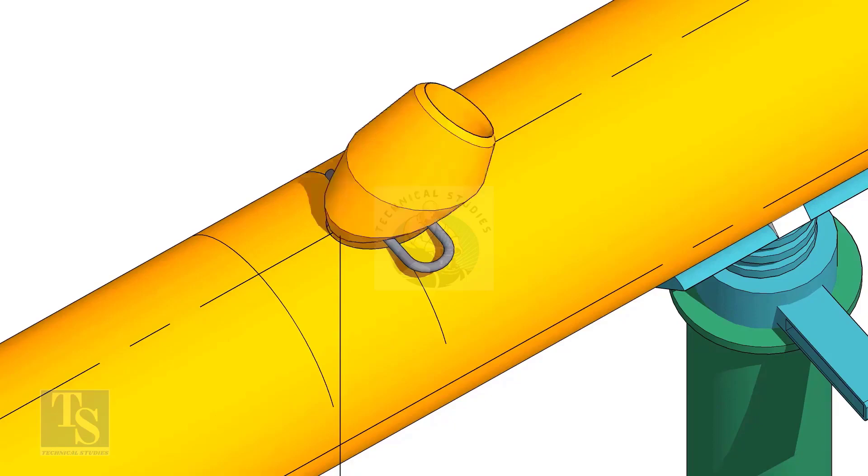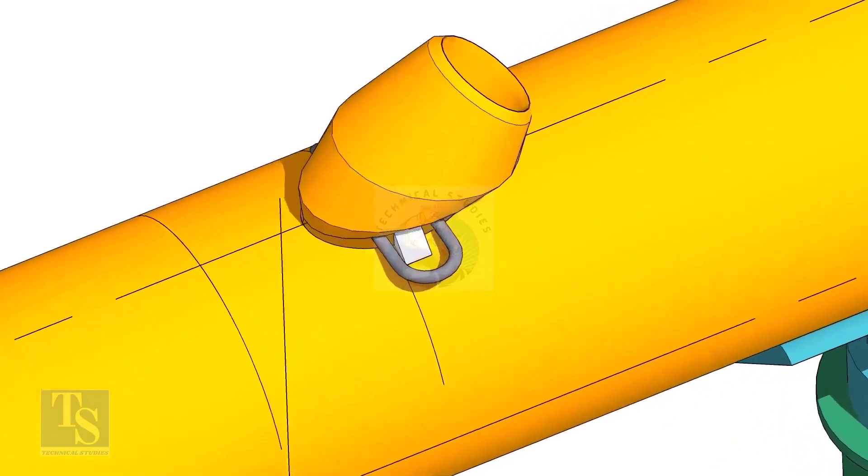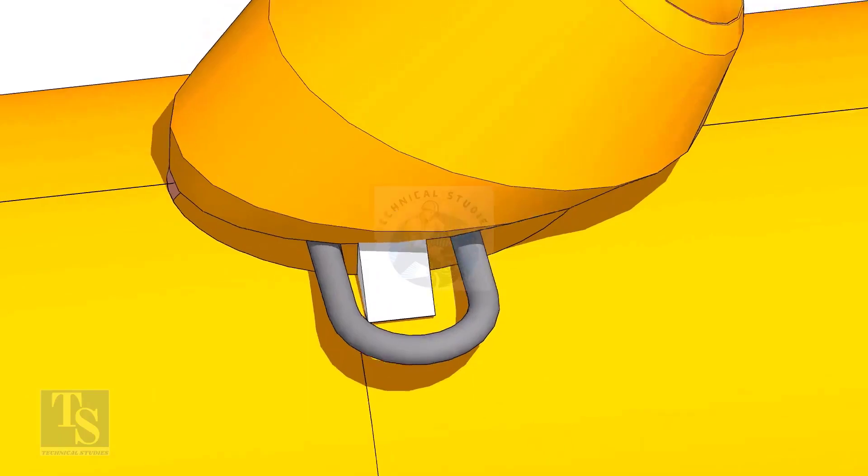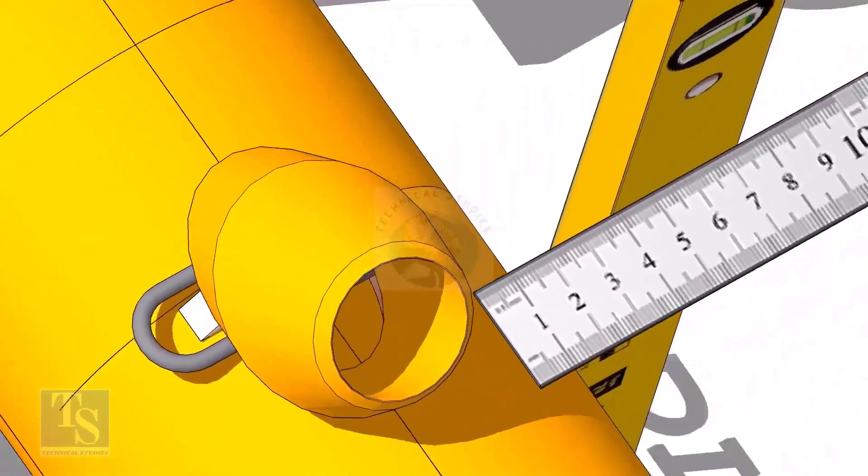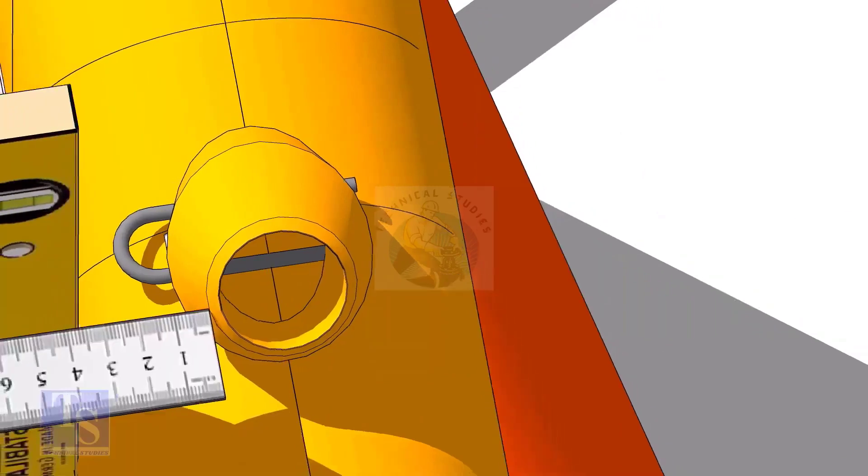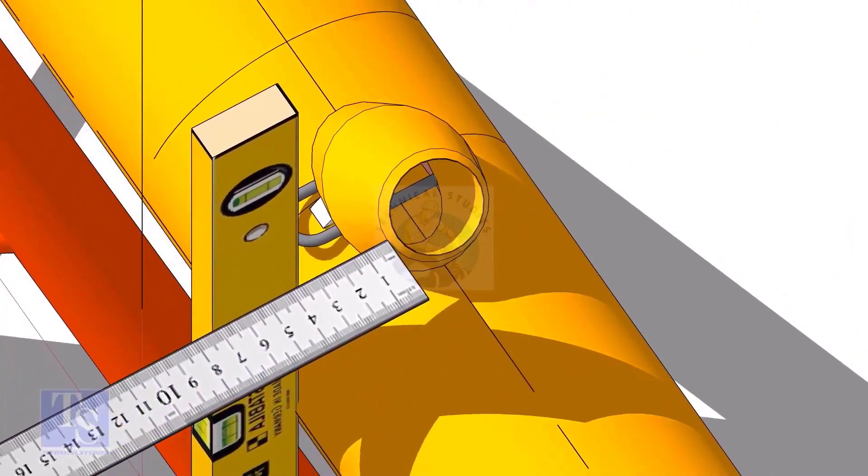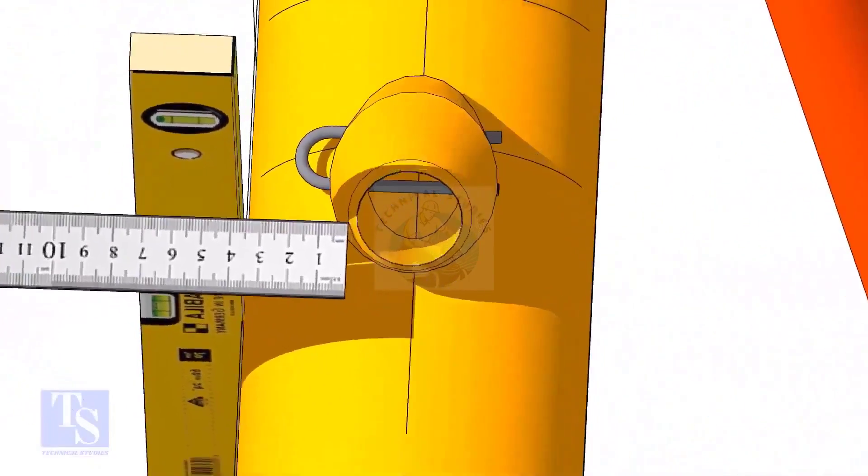Put the laterolette on the center of the hole. Tack weld on one side. Equal the distance from both sides of the laterolette. Tack weld on the other side.